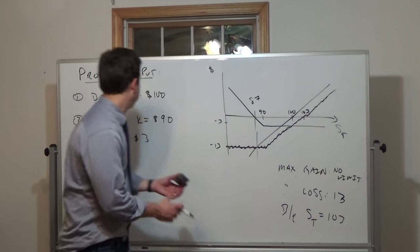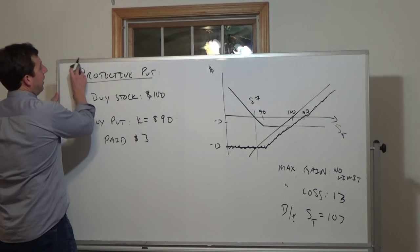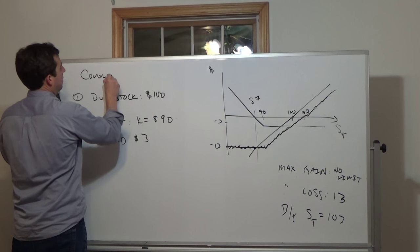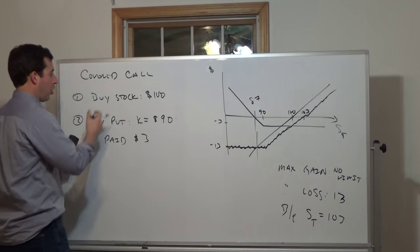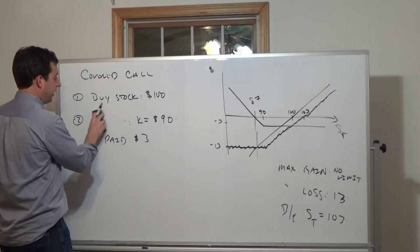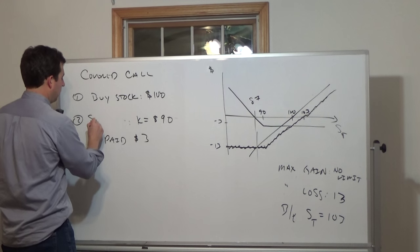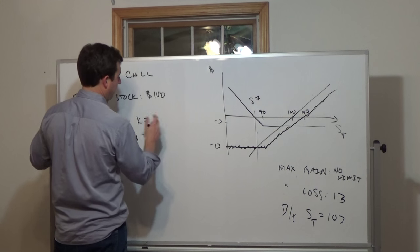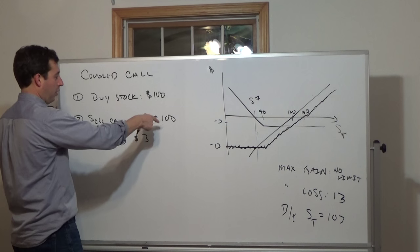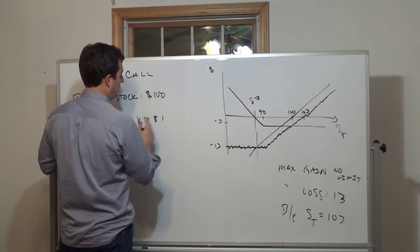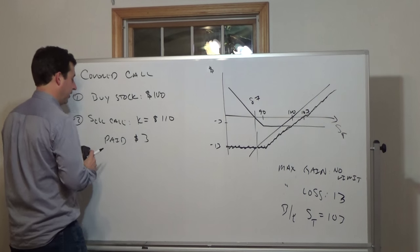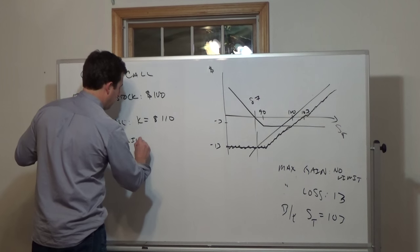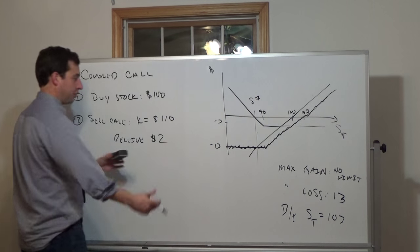The next strategy is the covered call — our two basic spread strategies. For a covered call, we still buy the stock for $100, but we sell a call. We're usually selling a call with a strike above what we paid, so we sell a $110 strike price call option. For selling it, we receive $2.